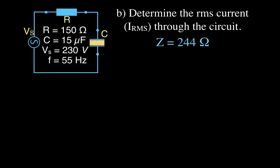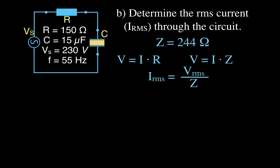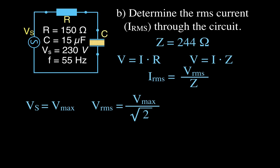Now we're going to determine the RMS current through the circuit. We use Ohm's law, but for an AC circuit we write V equals I times Z, because the impedance is the sum of all resistances and reactances — 244 ohms. Since we want the RMS current, we need the RMS voltage. The RMS voltage equals the maximum voltage divided by the square root of 2, which gives us 163 volts.